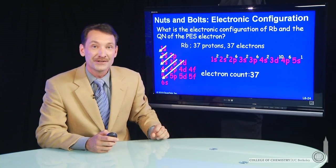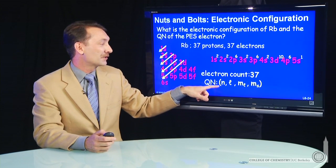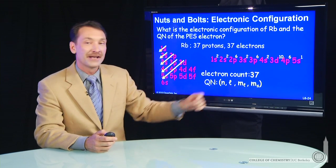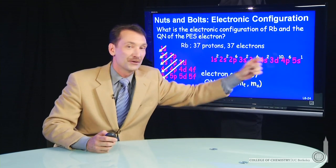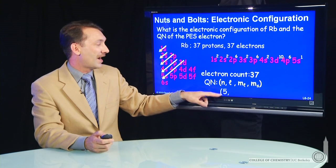What are the quantum numbers for that outermost electron? Well, the quantum numbers we generally write as n, l, m sub l, and m sub s. So n for the outermost electron is 5. It's in the fifth principle quantum level. So 5.